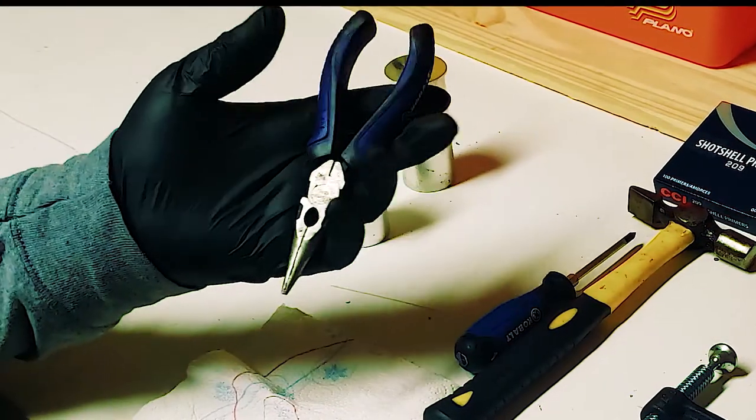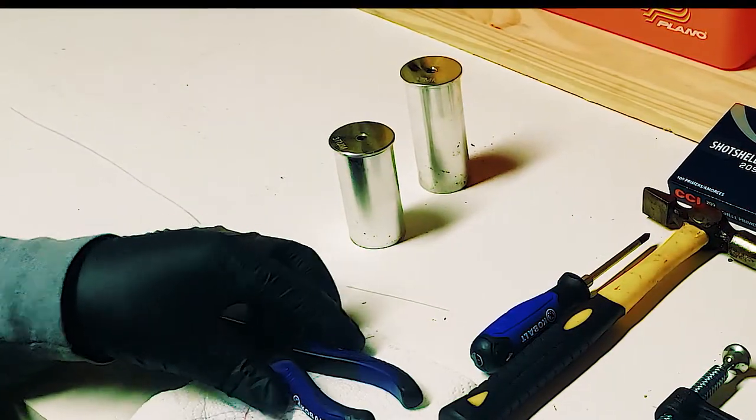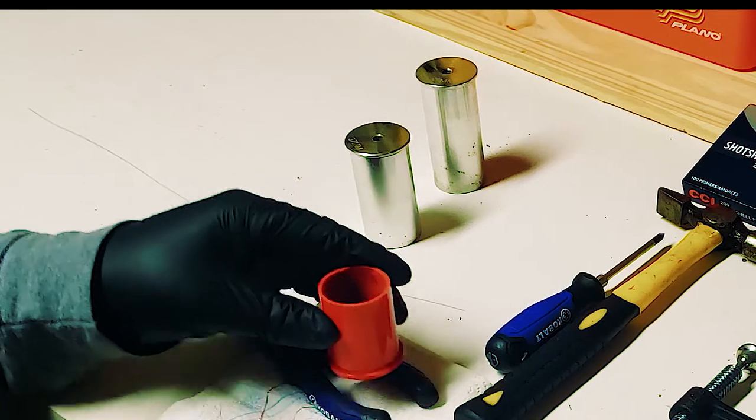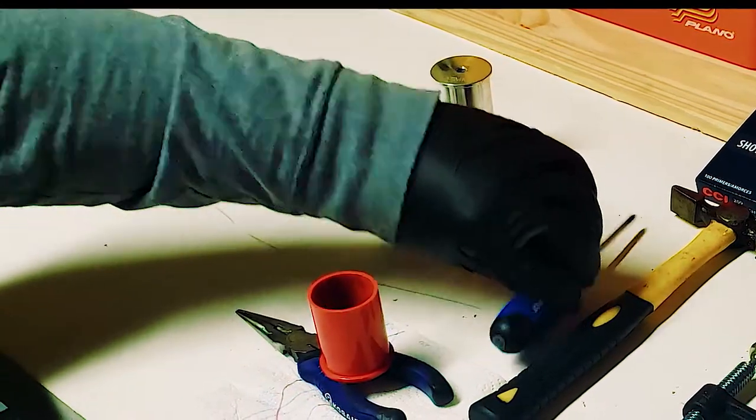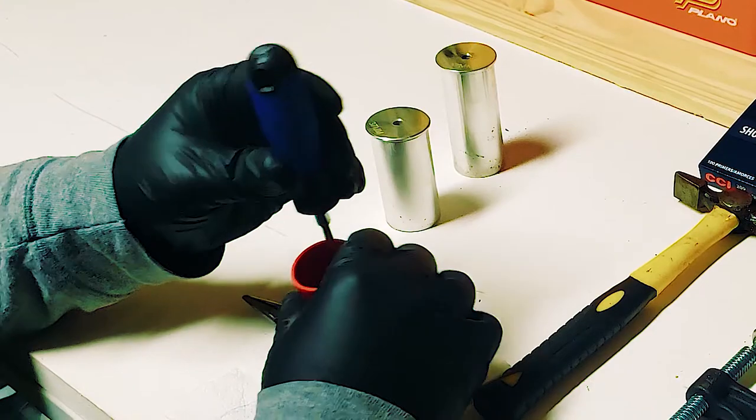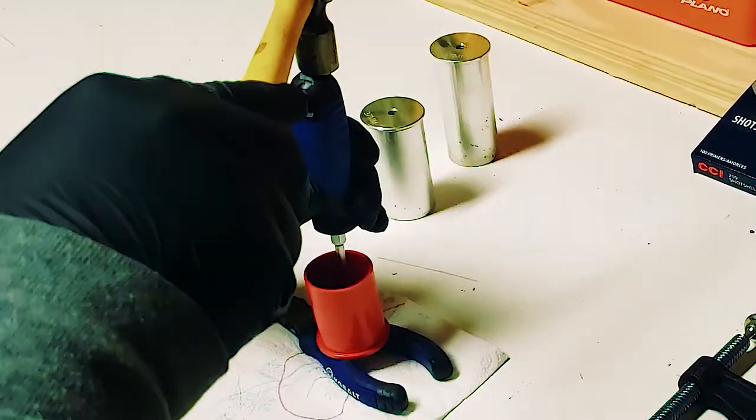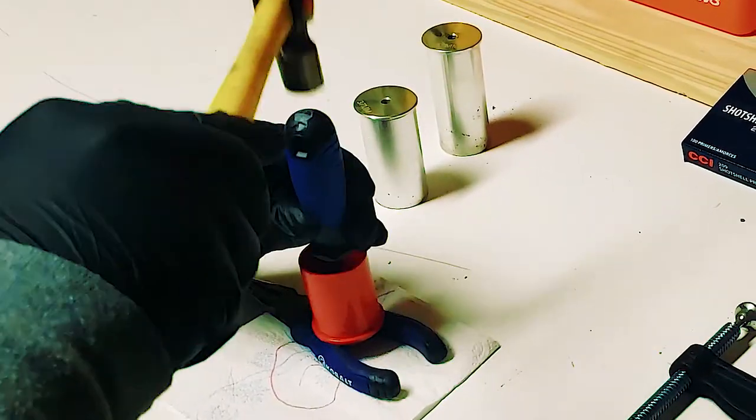For me, I just use whatever I already have out. Normally when I'm depriming a lot of rounds I'll put up my tabletop vise. To illustrate my point, I'm using a low tech method here: a simple set of pliers, a Phillips screwdriver, and a lightweight hammer. It's as easy as setting the base of the hull on the surface and punching it through with your hole punch or Phillips screwdriver.